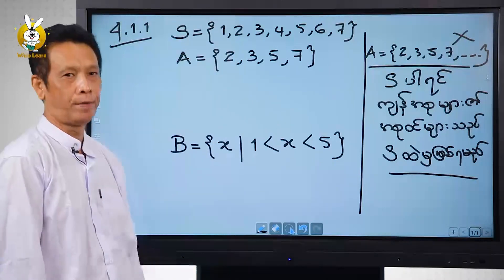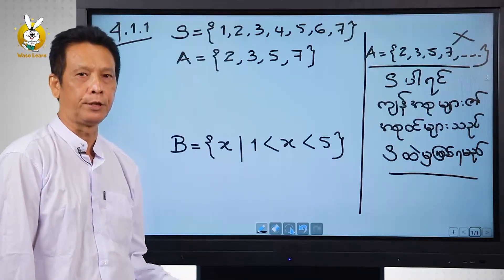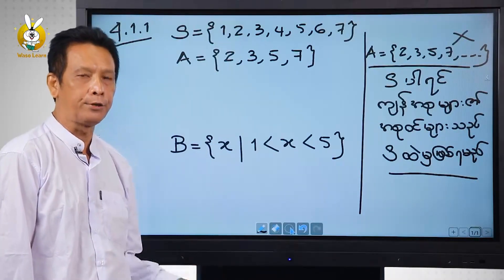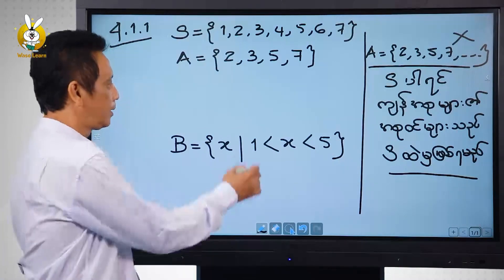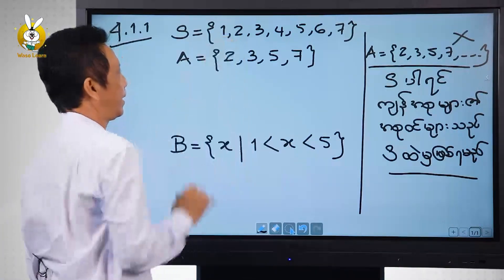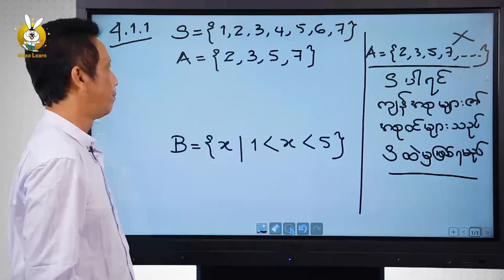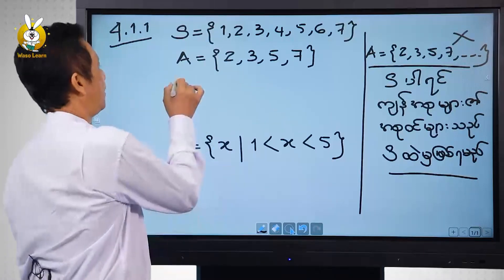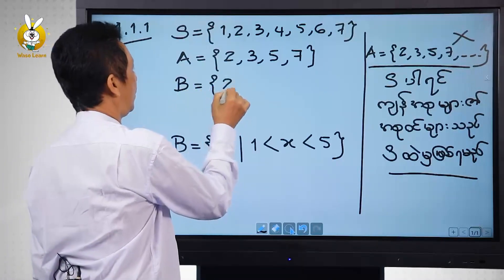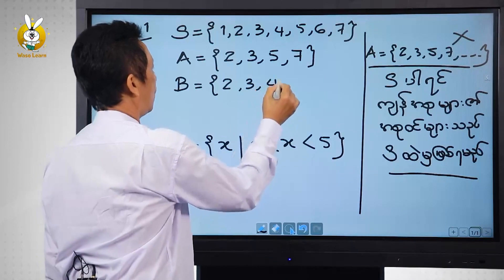S is a similar type of S. Now let's take a look at this one: two, three, four. B equal to zero, two, three, four.